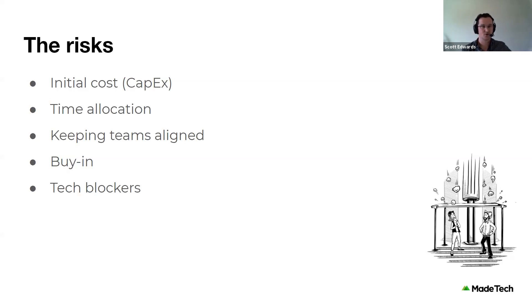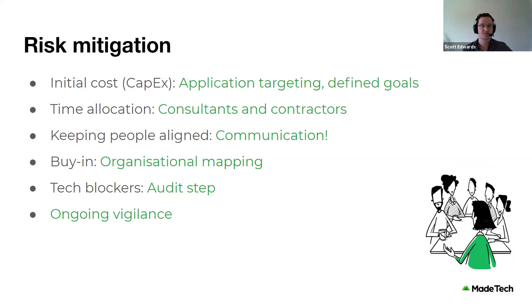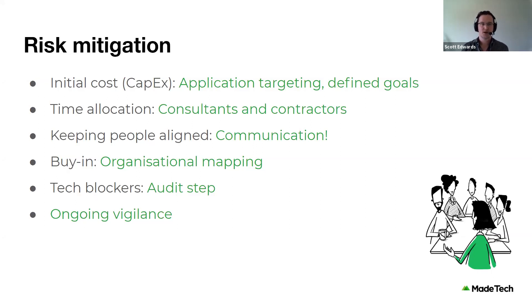So we've spoken about risks — you're probably wondering how we work to mitigate them. Before I run through suggestions, I want to be clear about what mitigation means. Risk mitigation is not about eliminating risk, because that's often not possible — it's about developing a plan to manage risk and explore various actions that could be taken in different scenarios, lessening the seriousness or extent of these risks should they materialize.